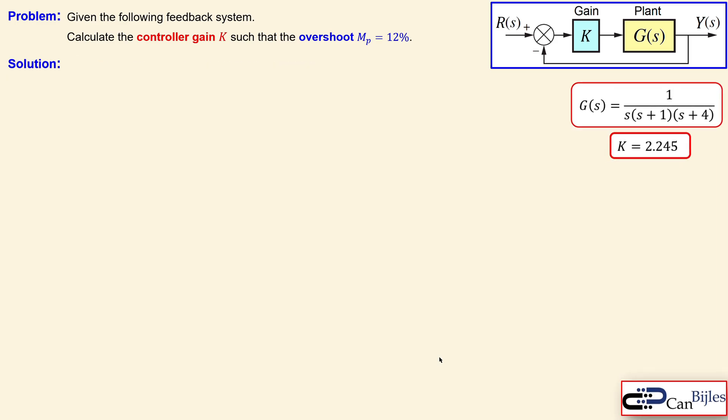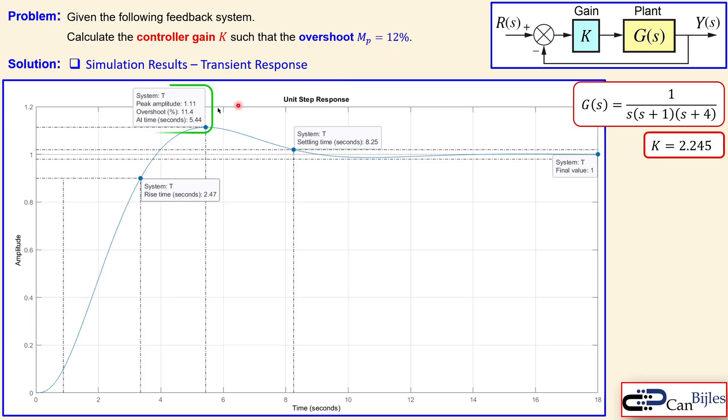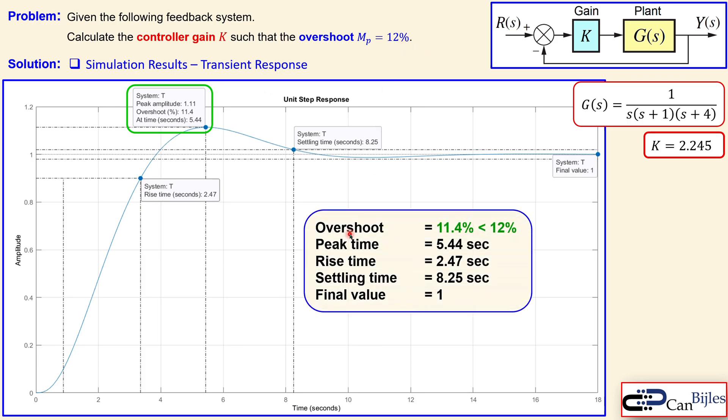Now moving on to the transient response, which is what we actually need to check, because that's the 12% in the transient response. Unit step response shows 11.4% which is less than 12%. So that is indeed according to the specifications. We have achieved our goal. We have our overshoot which is less than 12% and we have calculated the required gain, which is 2.245.